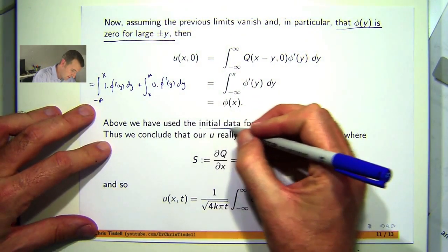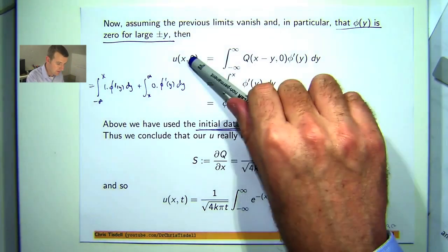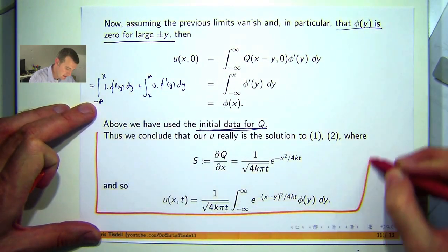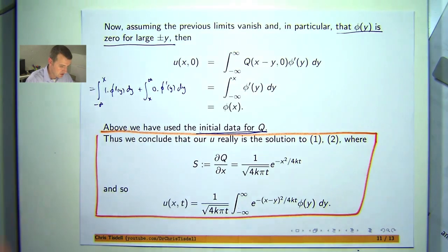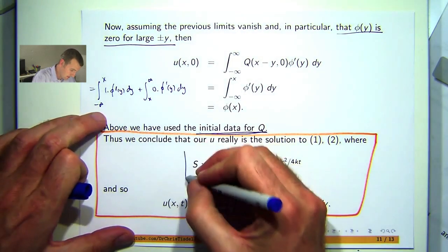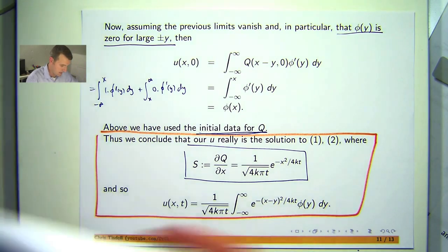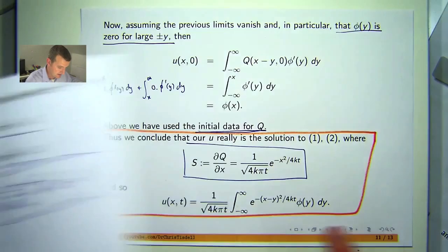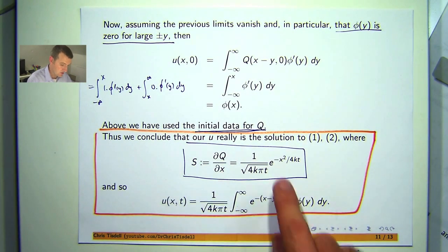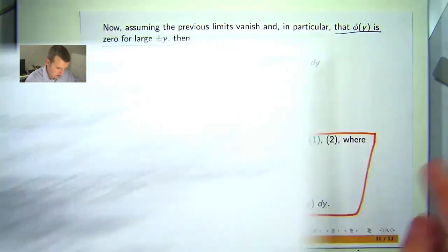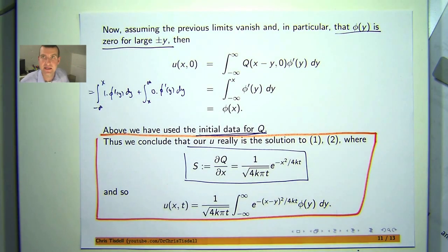So we've used the initial Heaviside data for q there. So what do we get? We get phi of x which is exactly what we wanted. So we conclude that our u really is a solution to 1 comma 2 where I can compute this s just from q. Just by differentiating it and here's my q just take the derivative of that with respect to x and I get this. So what I can do now is write down the explicit solution. This will go to this and this then is my solution to the heat equation.